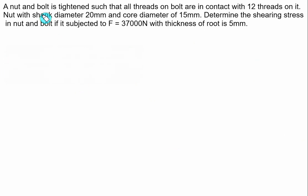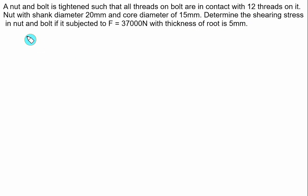A nut and bolt is tightened such that all threads on the bolt are in contact with 12 threads on the nut. The shank diameter (nominal diameter D0) is 20 mm and the core diameter DC is 15 mm. Determine the shearing stress in the nut and bolt if it is subjected to a force of 37,000 N with a thread root thickness of 5 mm.